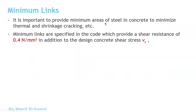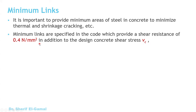It is important to provide minimum shear reinforcement to minimize thermal and shrinkage cracking. Similar to minimum reinforcement for longitudinal bars, the code requires minimum stirrups. The minimum links are specified to resist a shear stress of 0.4 N/mm². The concrete will also carry its share V_c, so the total shear is shared between the concrete and the links.